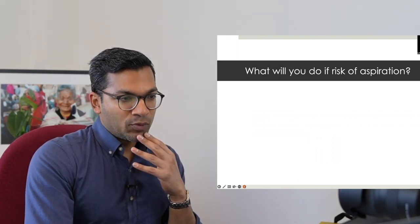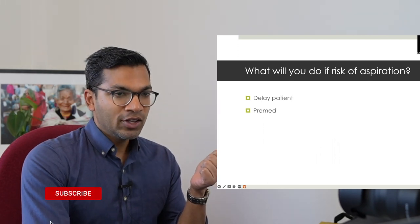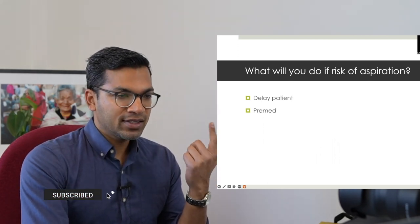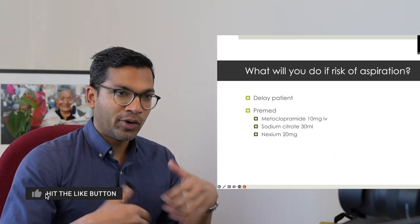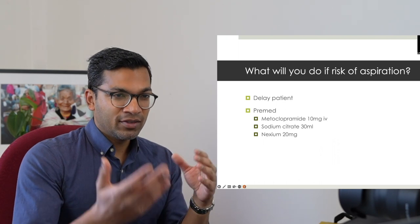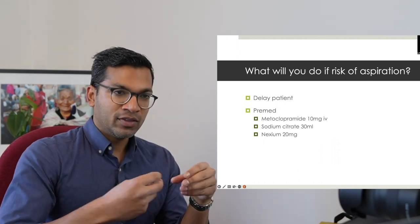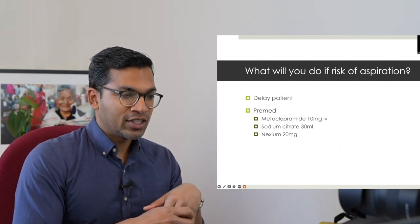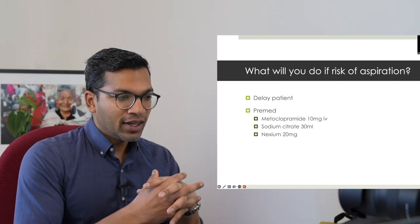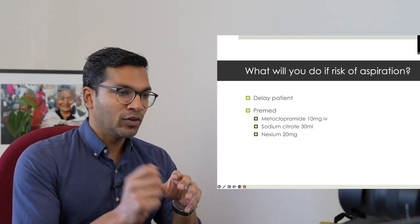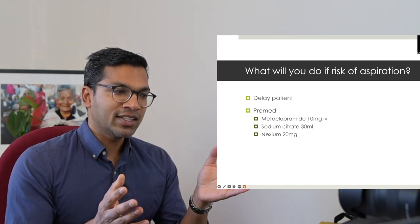If there's a risk of aspiration, options are: delay the patient, or pre-medicate with metoclopramide as a prokinetic, and sodium citrate — a non-particulate antacid that, unlike magnesium or aluminium mixtures, won't destroy the lungs if aspirated. Sodium citrate was historically given to pregnant patients before theatre, though many of these pre-medication strategies are not strongly evidence-based.